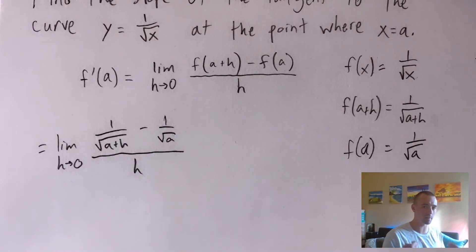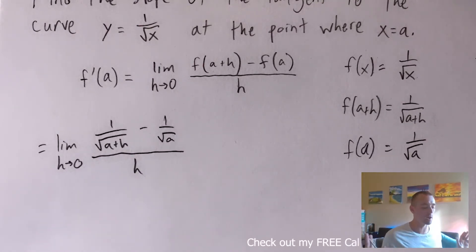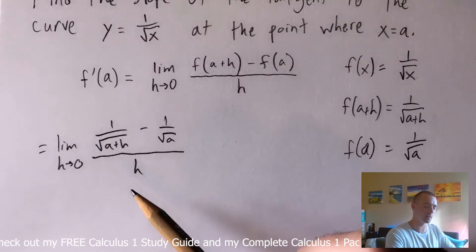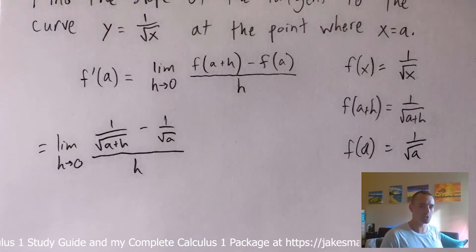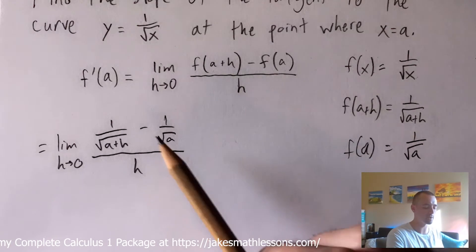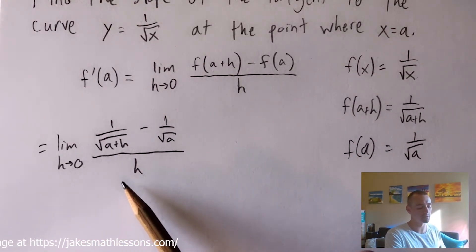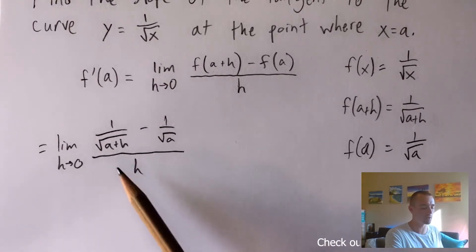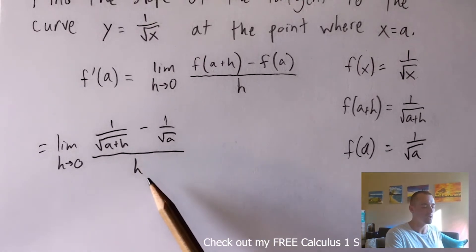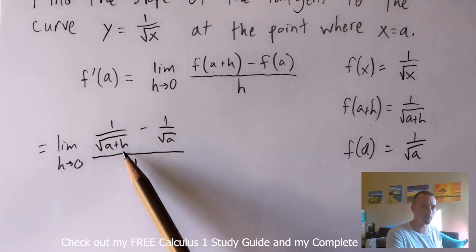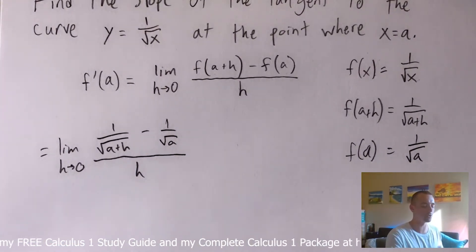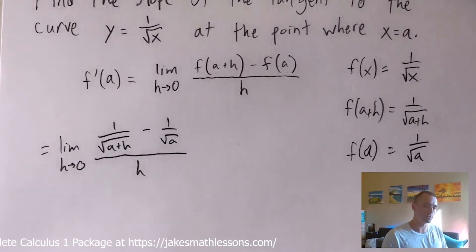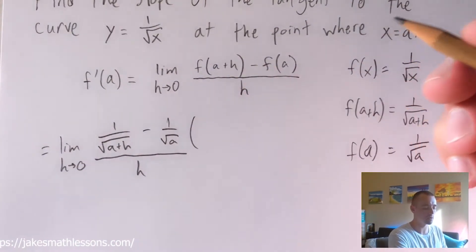We're going to use a couple of tricks that come up a lot when using the definition of the derivative to find the derivative of a function with both a fraction and a square root. The general strategy is that we can't just plug in zero for h because we'd be dividing by zero, which is against the rules of math. So we want to manipulate this function so that the h in the denominator gets canceled out, and then we can plug in zero for h. In this case, we have an h trapped inside square root terms being subtracted from each other in the numerator, so a good strategy is to multiply by the conjugate.